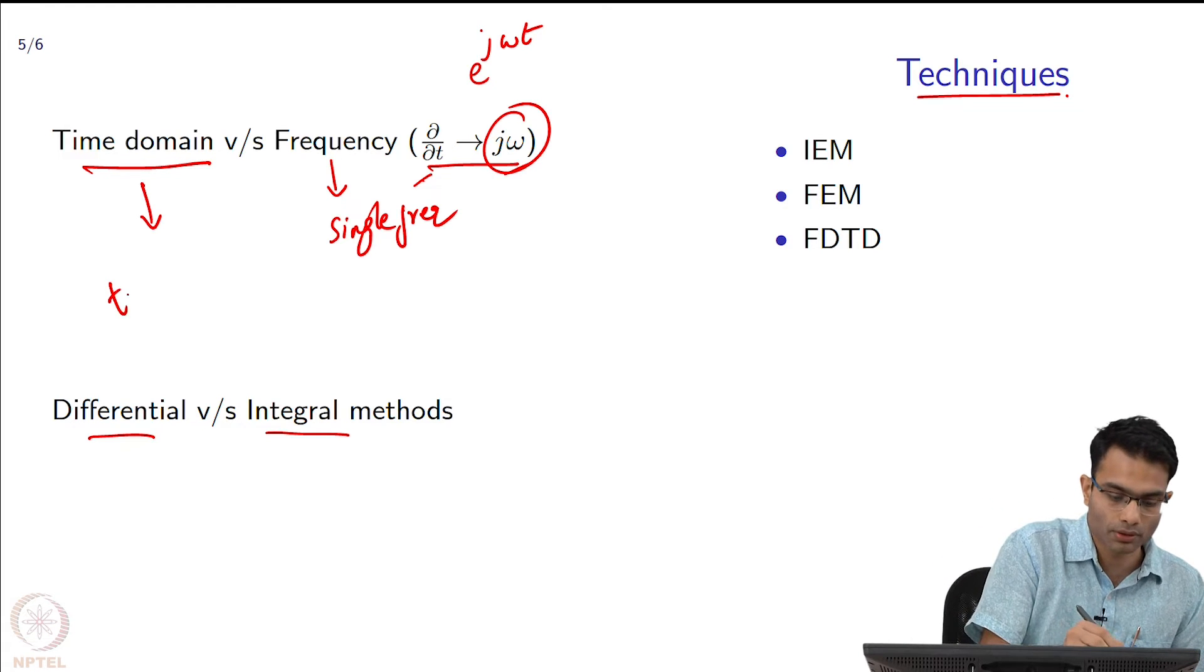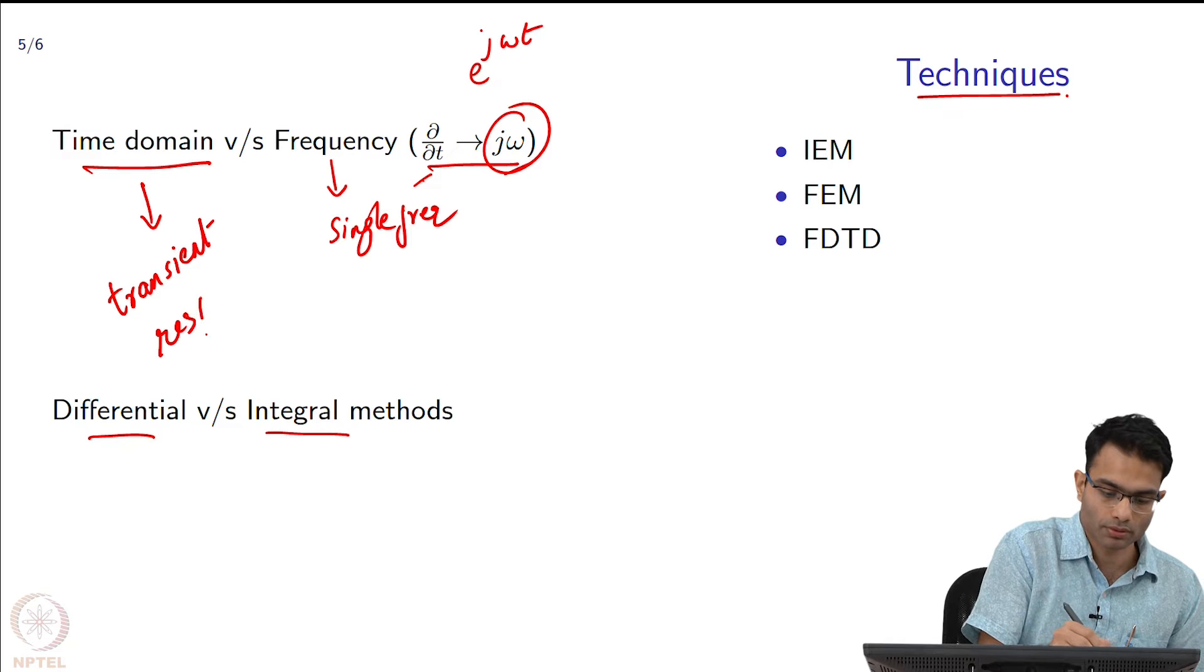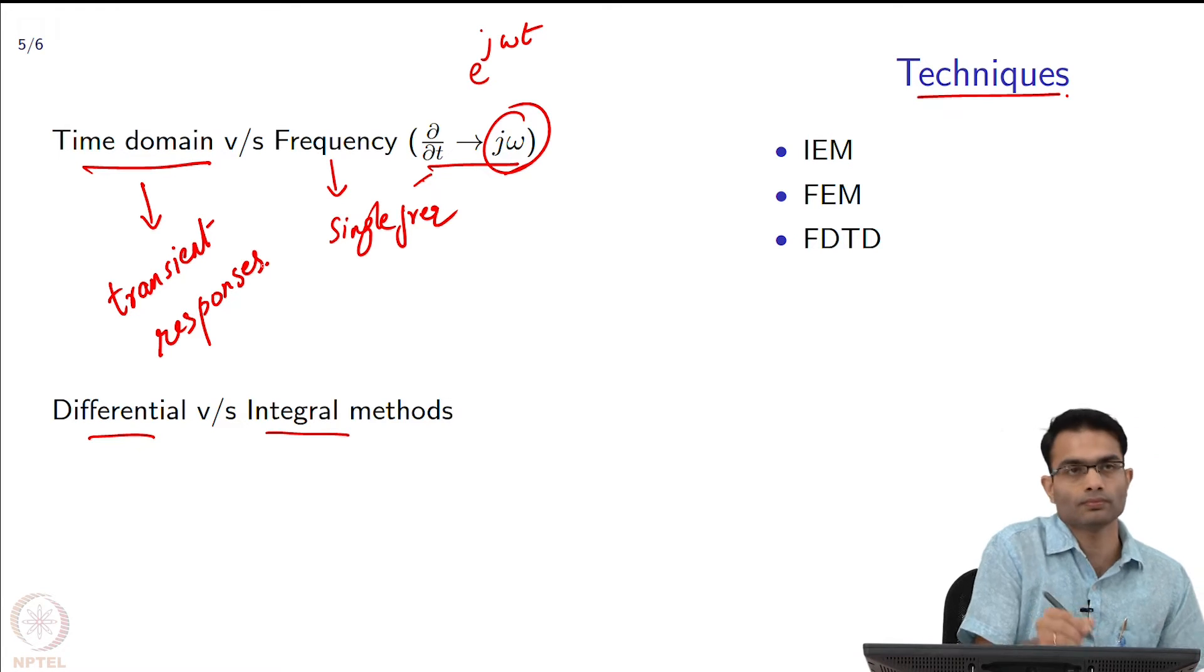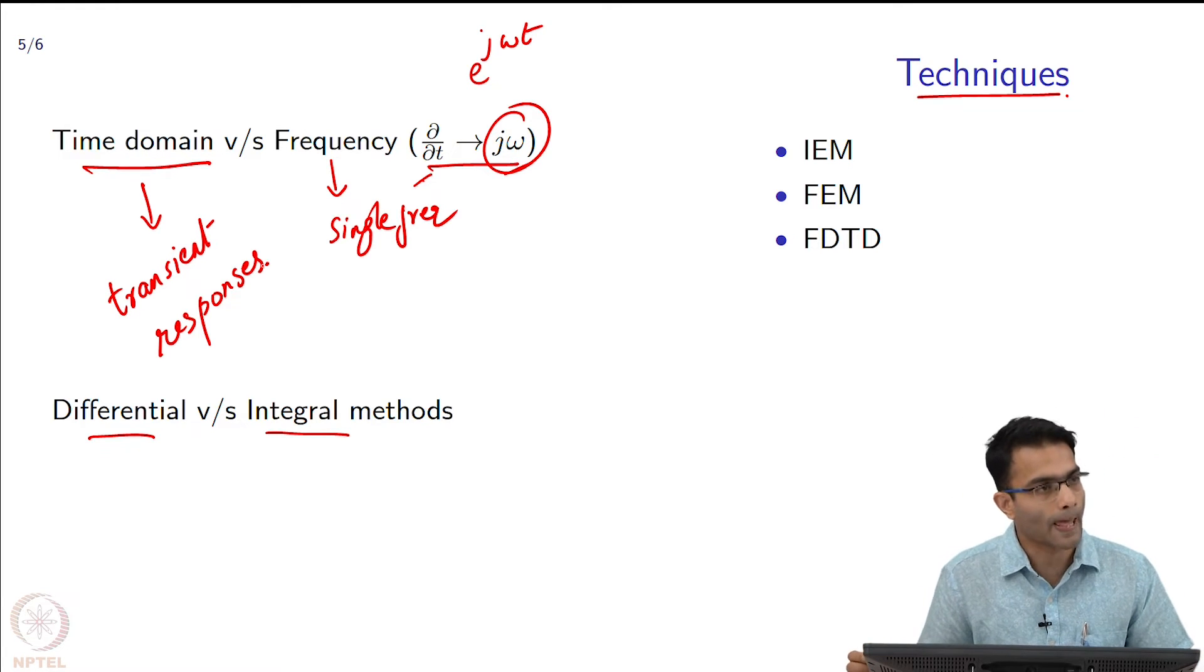This is for example transient responses. That is two different ways of looking at time versus frequency. The other aspect is differential versus integral.